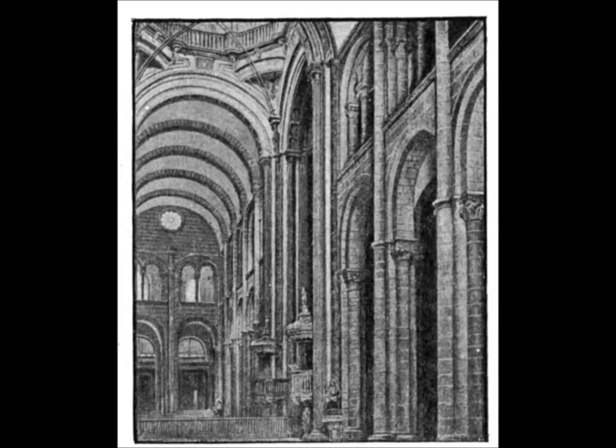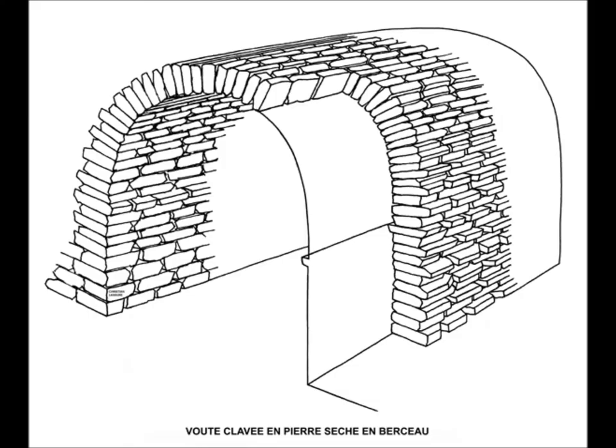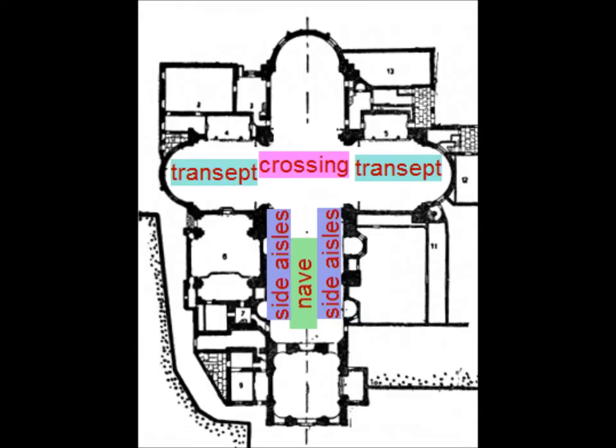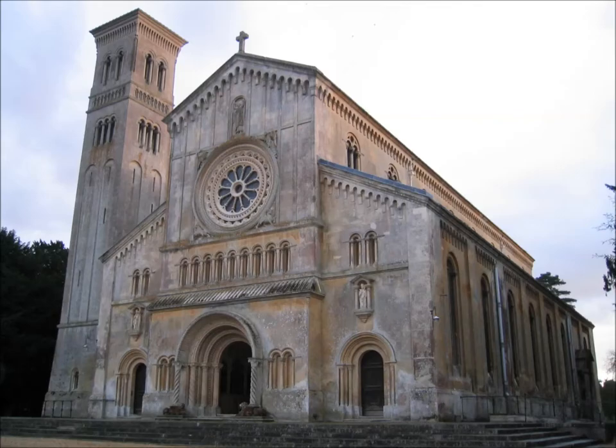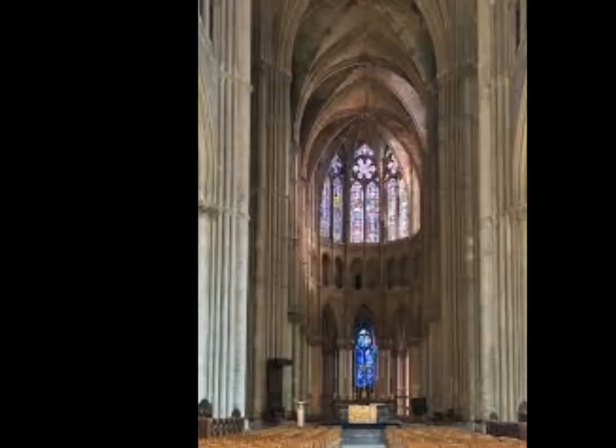What to look for in a Romanesque church: rounded arches over doors and windows (a must), barrel vault over nave, rectangular cross floor plan, stone roof, plain exterior, and a massive, heavy look.